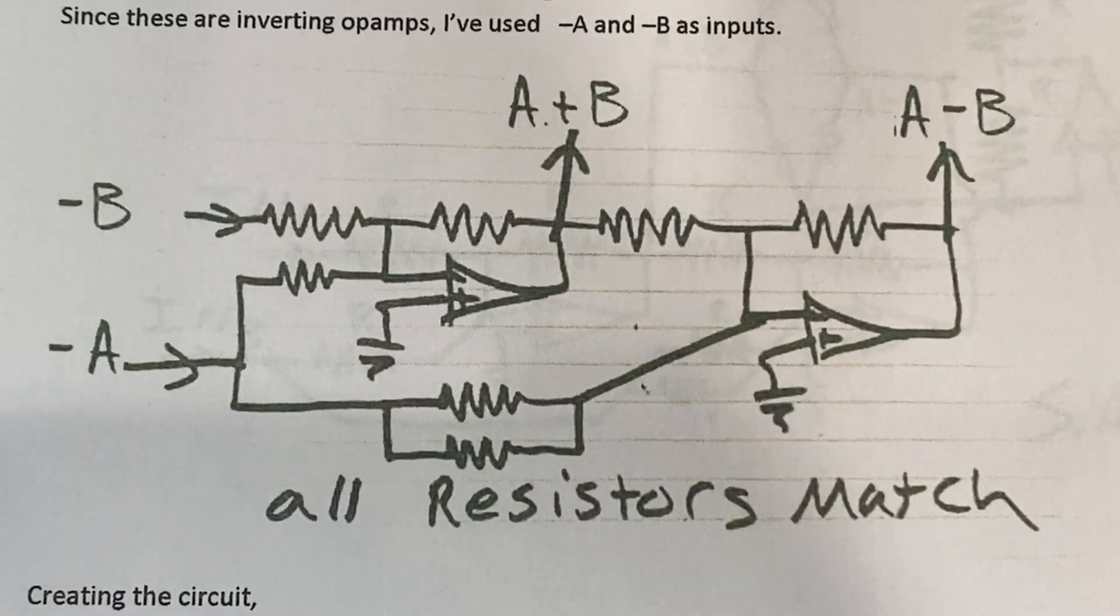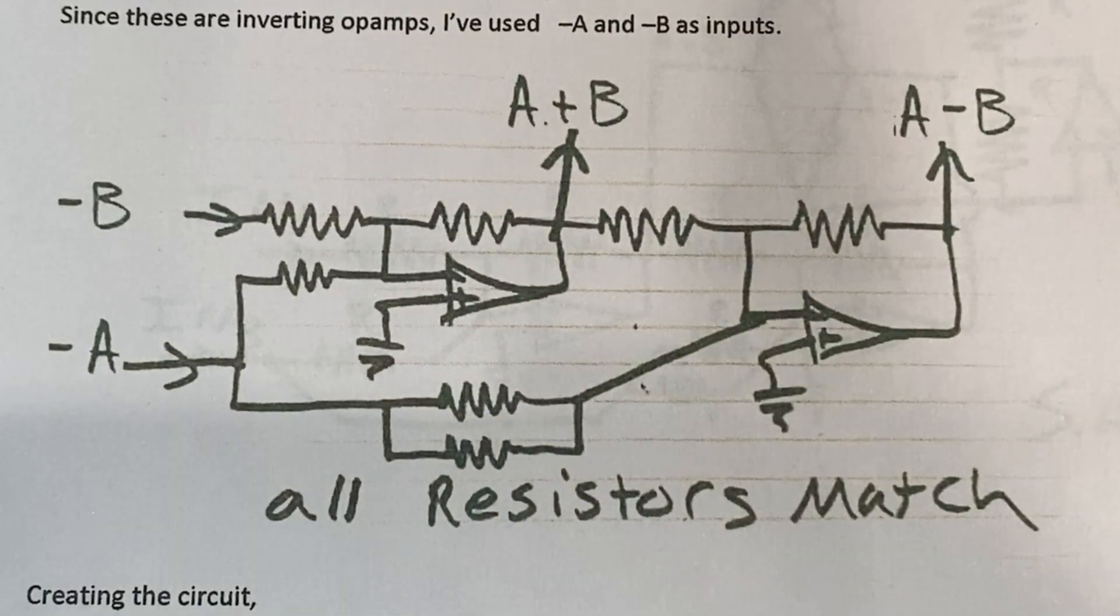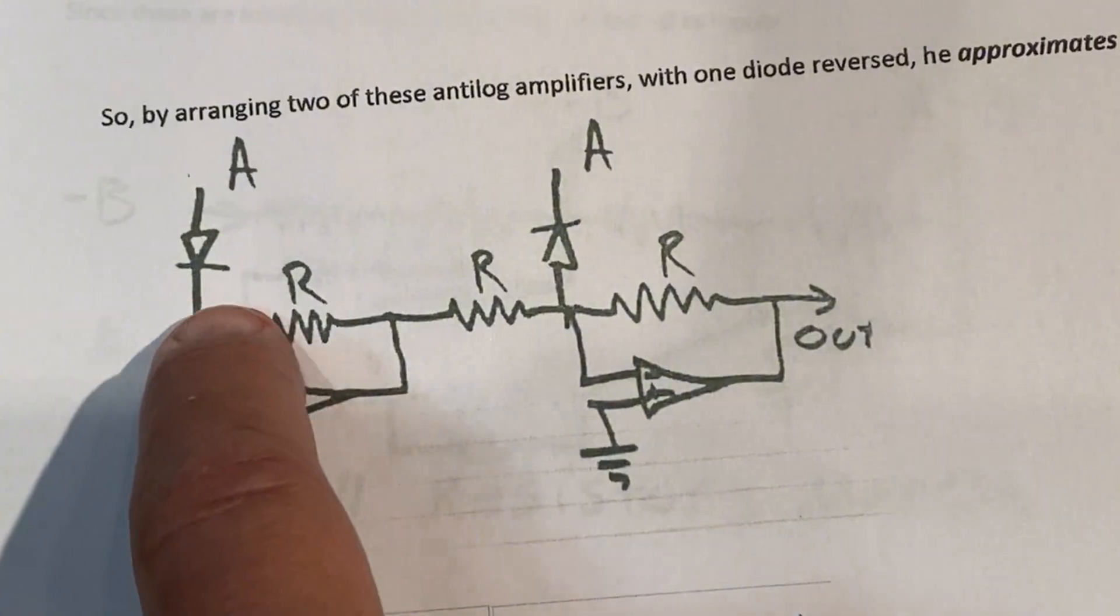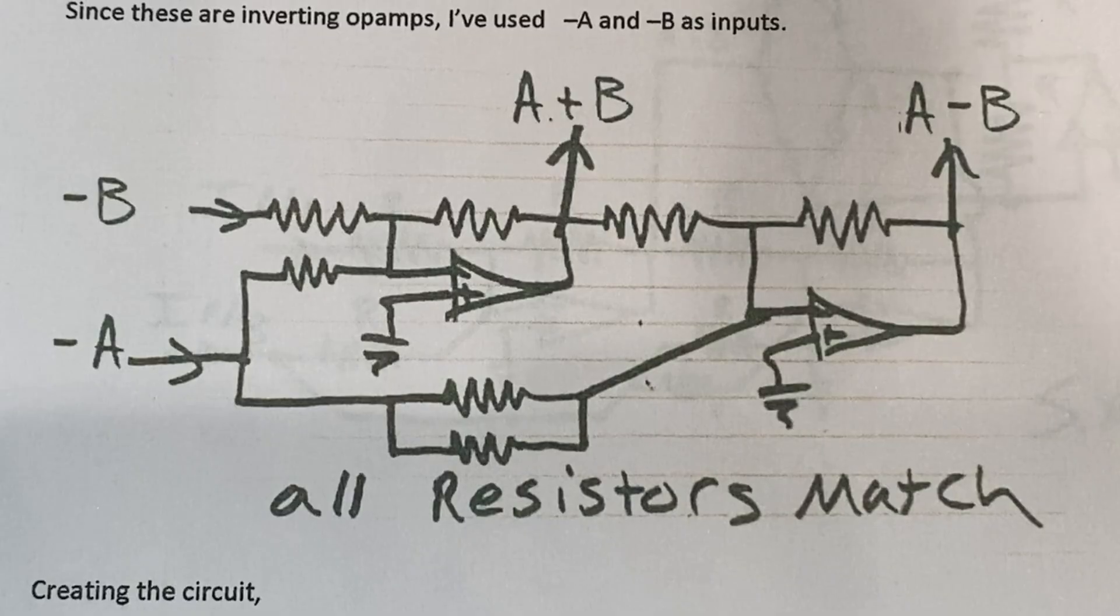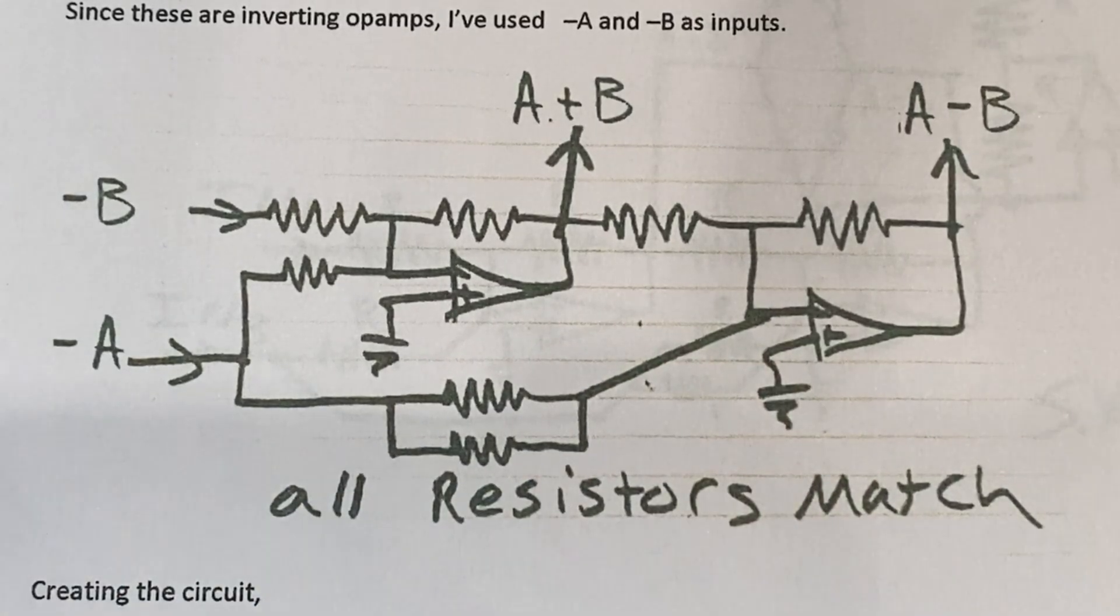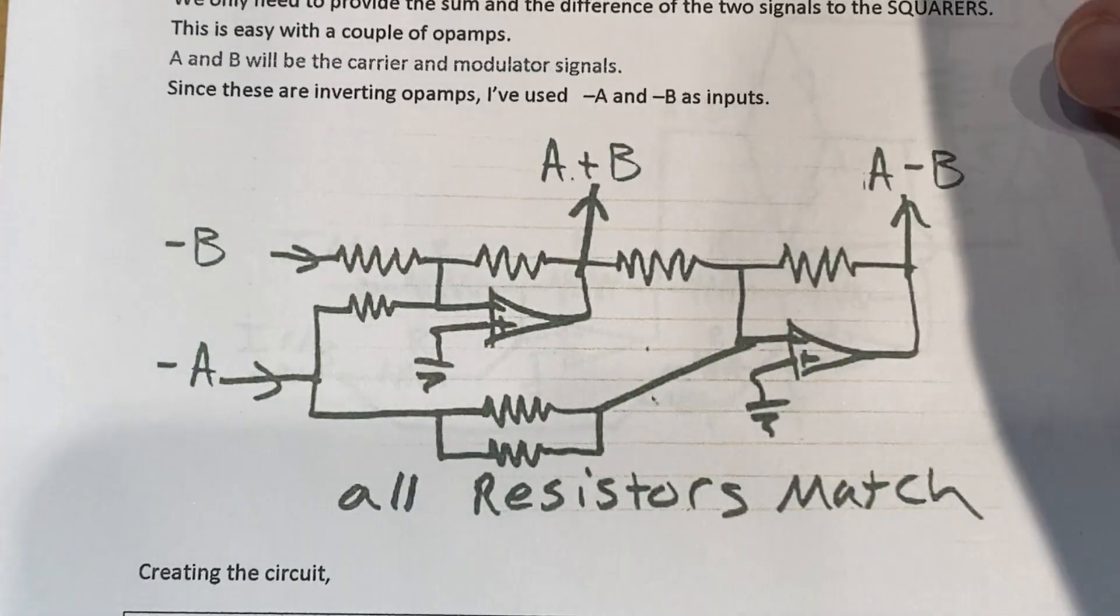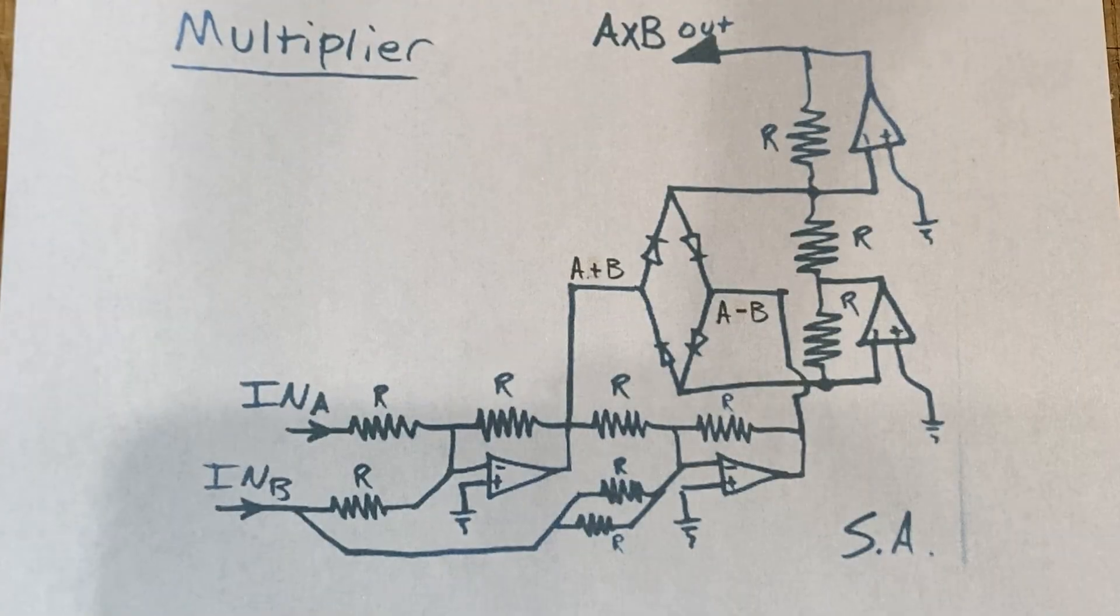So to build the circuit, he does recommend using precision resistors, he does recommend using Schottky diodes, and he also recommends using low offset op-amps. I didn't do any of that stuff, but what I wound up doing is building his circuit here.